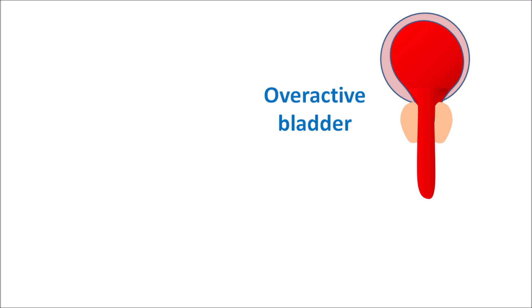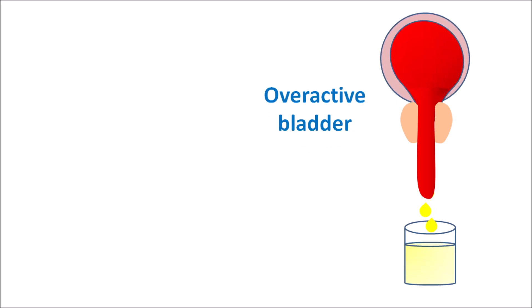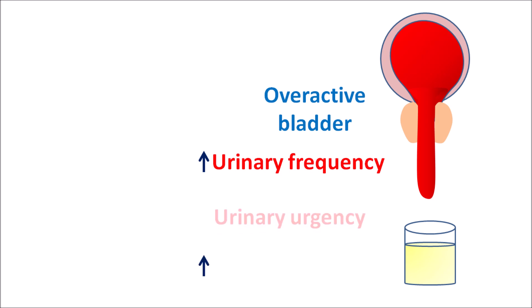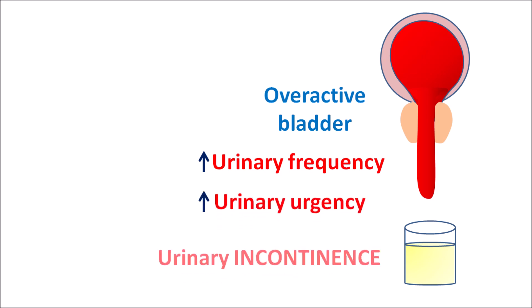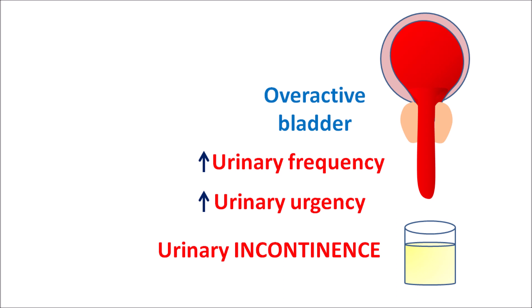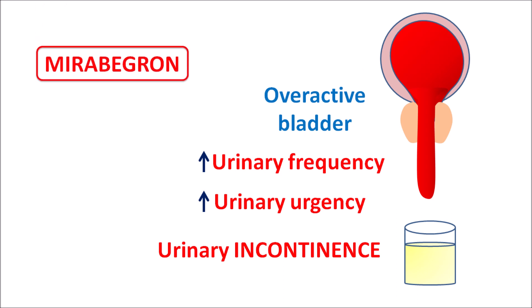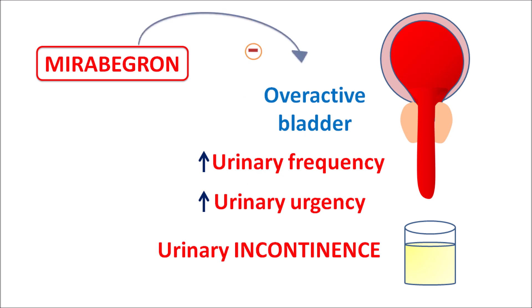Mirabegron is used in conditions such as overactive bladder. When the bladder contracts frequently, it results in increased urinary output, leading to symptoms such as increased urinary frequency, enhanced urinary urgency, and urinary incontinence — the patients are unable to control urination.